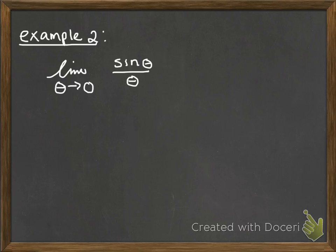This is another special case. If you ever come across this kind of problem, where it's sine theta divided by theta, and you're approaching 0, your answer is always going to be a 1.